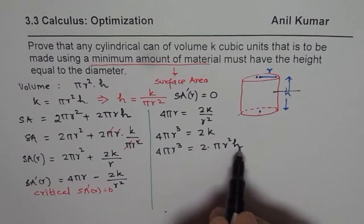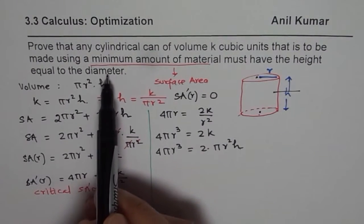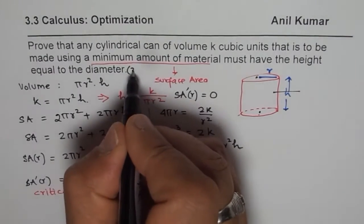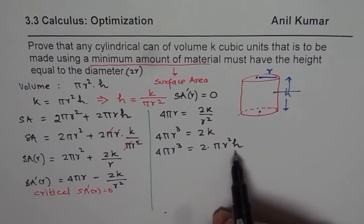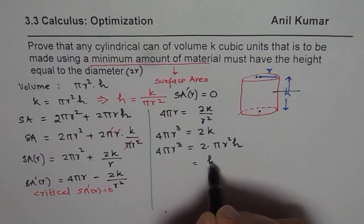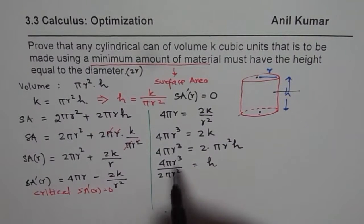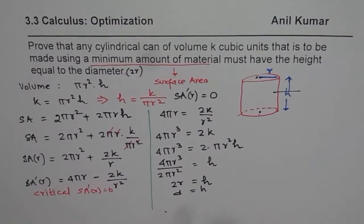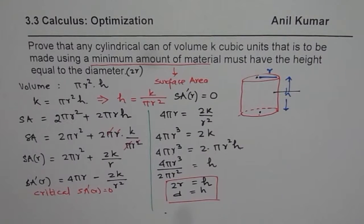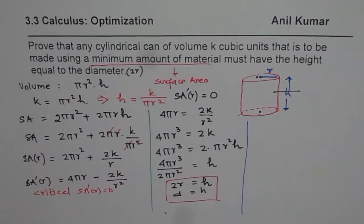Since we have to prove that the height is equal to the diameter, and diameter is two times the radius, let us rearrange. From 4πr³ = 2πr²h, we solve for height: h = 4πr³/(2πr²), which simplifies to h = 2r. This is the diameter. So we have proven that height equals 2r, i.e., height equals diameter, to minimize the surface area.